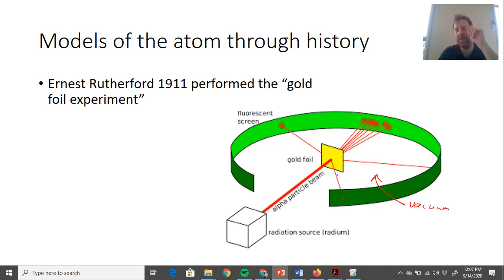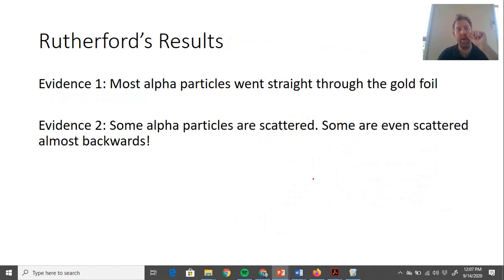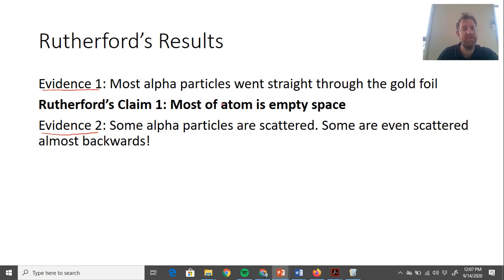From that, he deduced what we now know of the atom. I want you to know the difference between the evidence he saw and the model he put together. He found two bits of evidence: most particles went straight through, and some alpha particles were scattered, even almost backwards. From evidence one, he concluded that most of the atom is empty space.